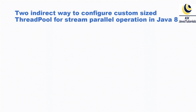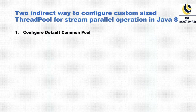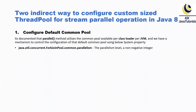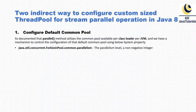Here are the two indirect ways to configure a custom sized thread pool for stream parallel operation in Java 8. The first approach is to configure the default common pool. It's documented that the parallel method utilizes a common pool available per class loader per JVM. We can control it using the system property: java.util.concurrent.ForkJoinPool.common.parallelism. This parallelism level must be a non-negative integer — always provide a positive number.